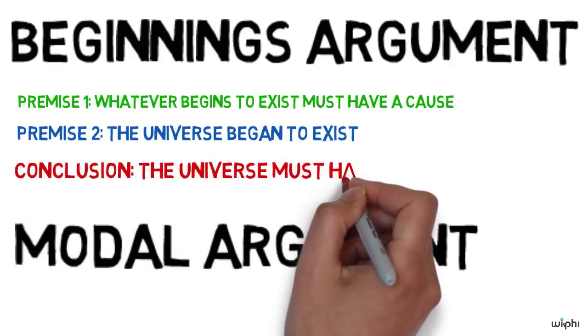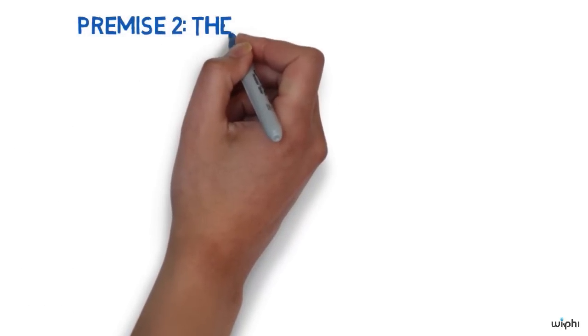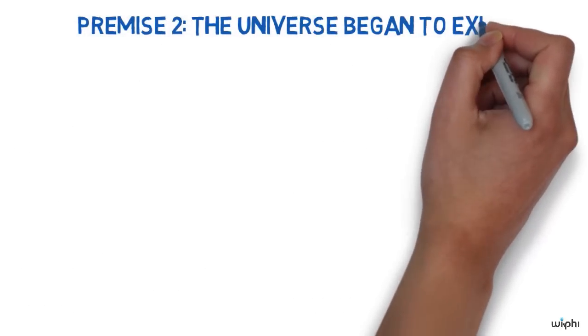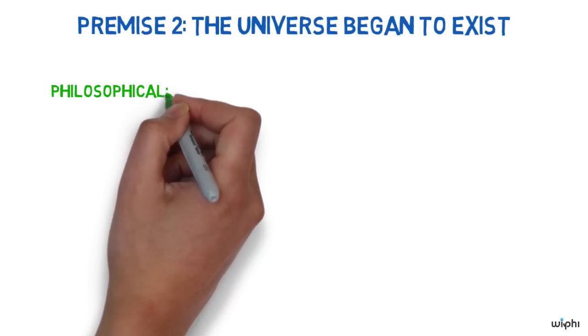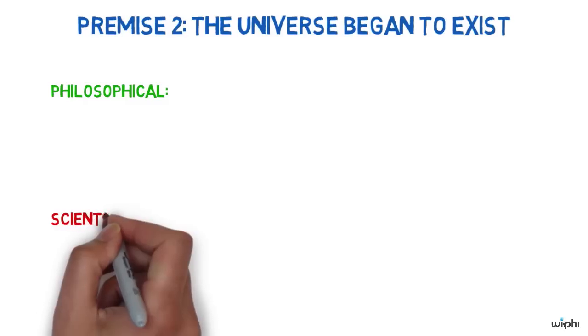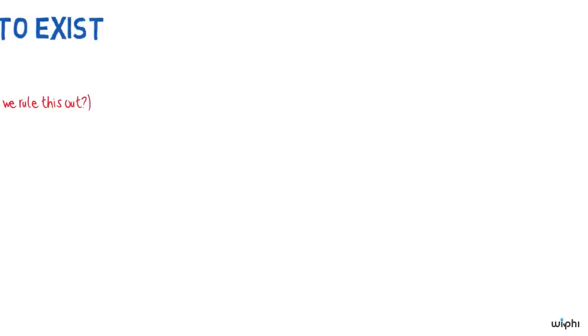We'll begin by examining the second premise. There are two kinds of arguments that attempt to show that the second premise is true: philosophical arguments and scientific arguments. The philosophical arguments attempt to rule out the possibility that the universe exists but has no beginning. So let's think about this first.